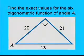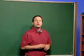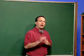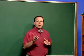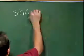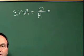Let's use our newfound definitions to find the trig functions for the values in this following example: find the exact values for the six trig functions of angle A. Using our new definitions, we know that the sine of angle A is equal to the side opposite divided by the hypotenuse.